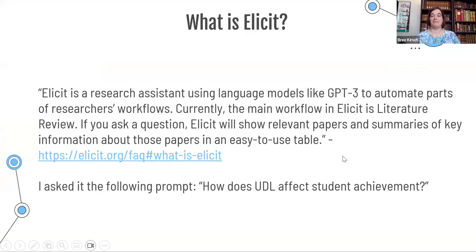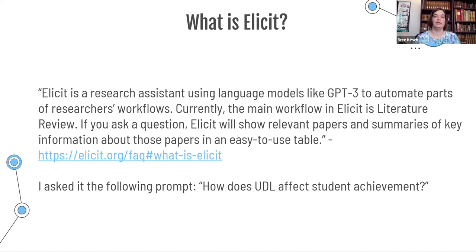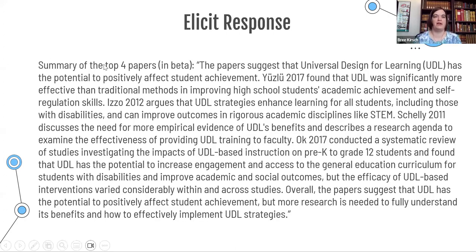Let's go back and talk about my personal favorite tools as a librarian — the research tools. What is Elicit? According to Elicit, it's a research assistant using language models like ChatGPT or GPT-3 to automate parts of researchers' workflows. The main workflow in Elicit is the literature review — if you're in academia, you know how time-intensive literature reviews can be. If you ask it a question, it will show you relevant papers and summaries of key information in an easy-to-use table.